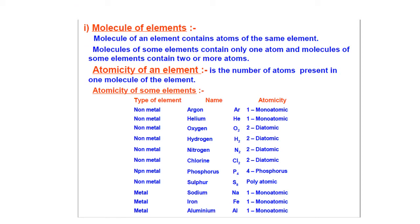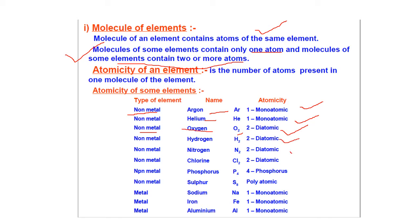The molecule of elements: element contains atoms of the same element. Molecules of the same element can contain only one atom or two or more atoms. A molecule can be formed by only one kind of atom or by two types of atoms. For example, the non-metal argon (Ar) is monoatomic — only one atom is present. Helium (He) is also monoatomic. But in the case of the non-metal oxygen, O2, two atoms are present, so it is diatomic. In the same way, hydrogen, nitrogen, and chlorine are diatomic.